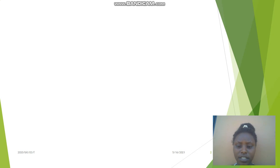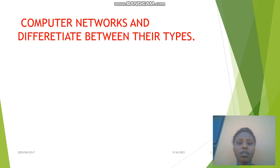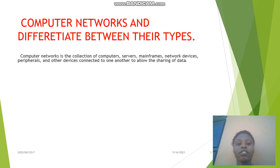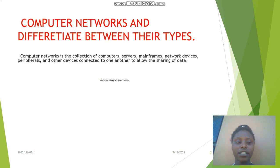Project 1: Computer networks and differences between their types. Computer networks is the connection of computers, servers, mainframes, network devices, peripherals and other devices connected to one another to allow the sharing of data.